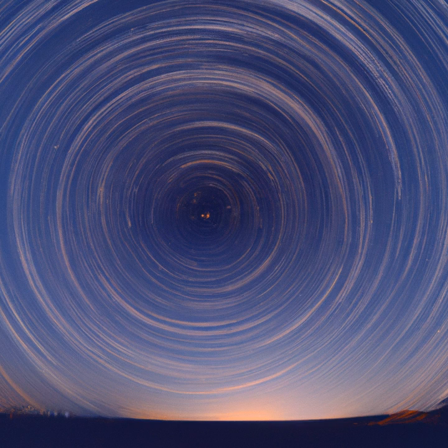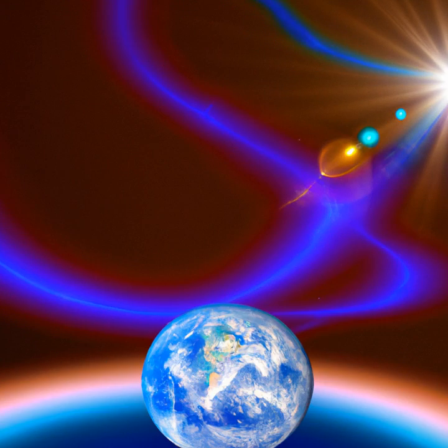The Earth's orbit around the Sun is an elliptical shape, meaning that it is not a perfect circle. This means that the Earth is sometimes closer to the Sun and sometimes further away.